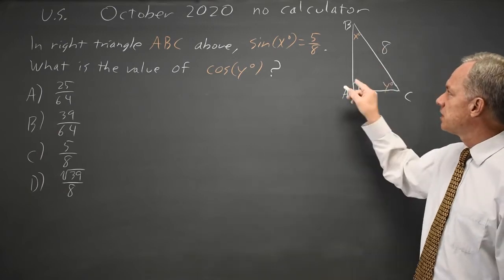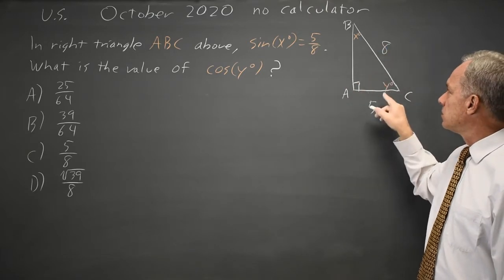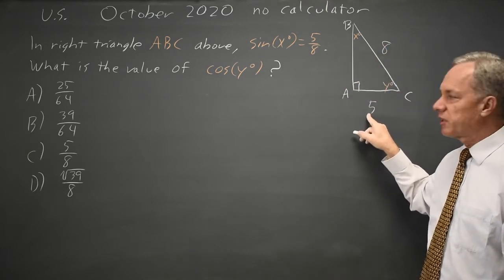And for any numbers that have a sine of 5 over 8 for x, the cosine of y will be 5 over 8.